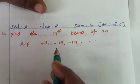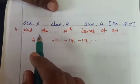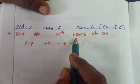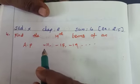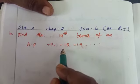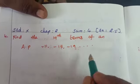Exercise 2.5 Fourth Sum. Find the 19th term of an AP: -11, -15, -19 and so on.